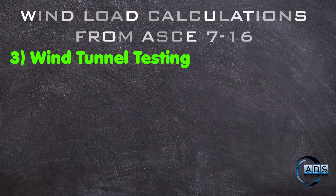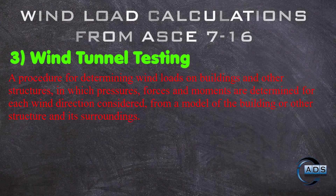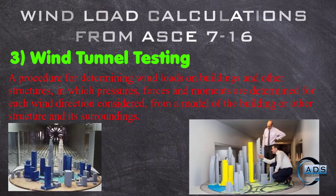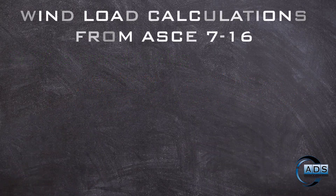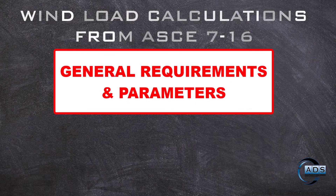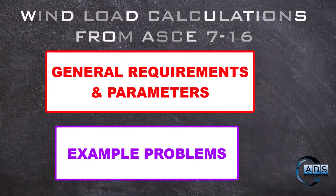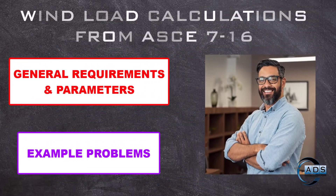The third is the wind tunnel procedure — a procedure for determining wind loads on buildings and other structures in which pressures, forces, and moments are determined for each wind direction considered from a model of a building or structure by placing it in a chamber in which wind is blowing artificially, and the engineer observes the response from the building or structure placed in that chamber. We will see the general requirements and parameters by taking example problems and calculating wind loads for these example structures, so we can better learn and understand the considerations of these requirements and parameters specific to each structure.